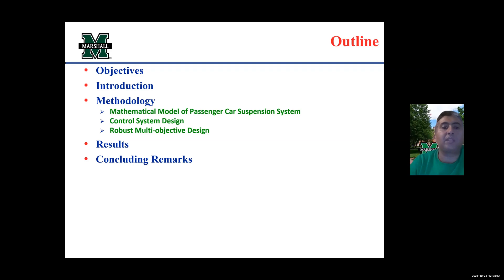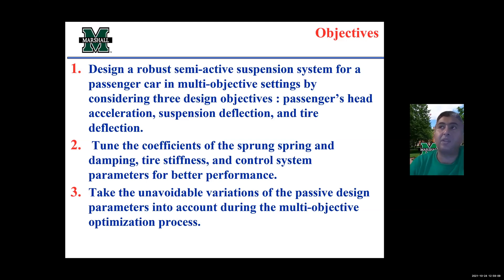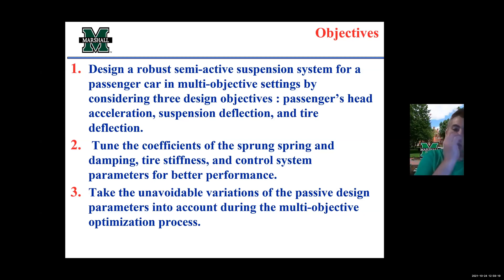We want to design a robust and optimal semi-active suspension system for a passenger car by considering three objectives: minimizing the passenger head acceleration, the suspension deflection, and the tire deflection. We are going to tune the coefficients of the passive suspension system parameters in addition to the control system parameters for better performance. This is not a traditional multi-objective optimization problem, as we also consider variation in the passive parameters of the system.